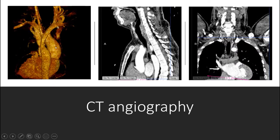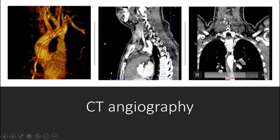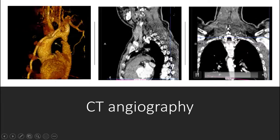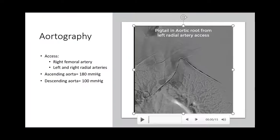Also in the coronal view, you can see the right subclavian artery originating from the descending aorta. There are many different variations in the aortic arch. In this patient, we see the variation known as aberrant right subclavian artery, where the right subclavian artery originates from the descending aorta after the left subclavian artery.